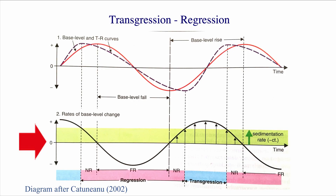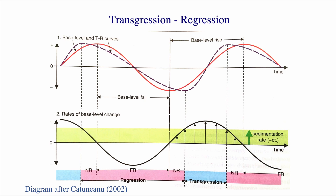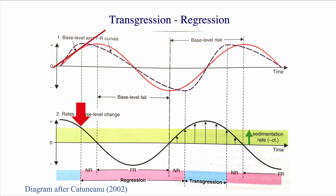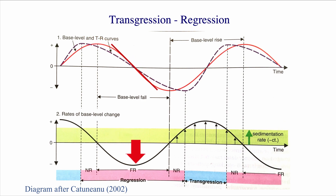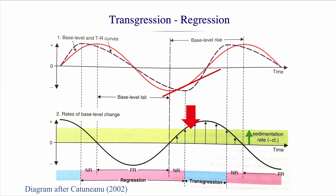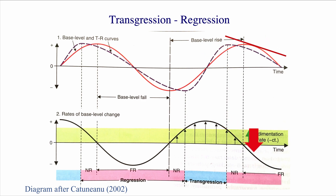At the bottom of the diagram you have the rates of the different things happening. These rates essentially represent the rates of base level change and the rates of sedimentation — that's the green area. For simplicity in this model, the sedimentation rates are maintained constant, represented by the top of the green line. The rates of base level change are obtained by looking at the slope of the base level curve, essentially doing a derivative of that curve. Even though it's a simple curve, its slope changes, which is why the rates of base level change are also not constant.